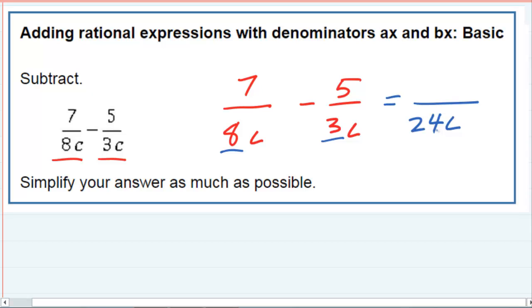So then the question is, what do I need to change about that first fraction? Well in order to turn that 8c into a 24c, I need to multiply by 3. But the only way I can multiply the bottom by 3 is if I also multiply the top by 3.